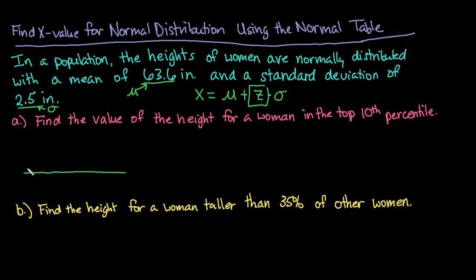So the first one that we're going to be looking for is the value of the height for a woman in the top 10th percentile. So remember that this will be centered at 63.6 and then we're counting out 2.5 standard deviations to the left and to the right. So what we need to do is first look at the area that we're looking for or the percentage that we're looking for.